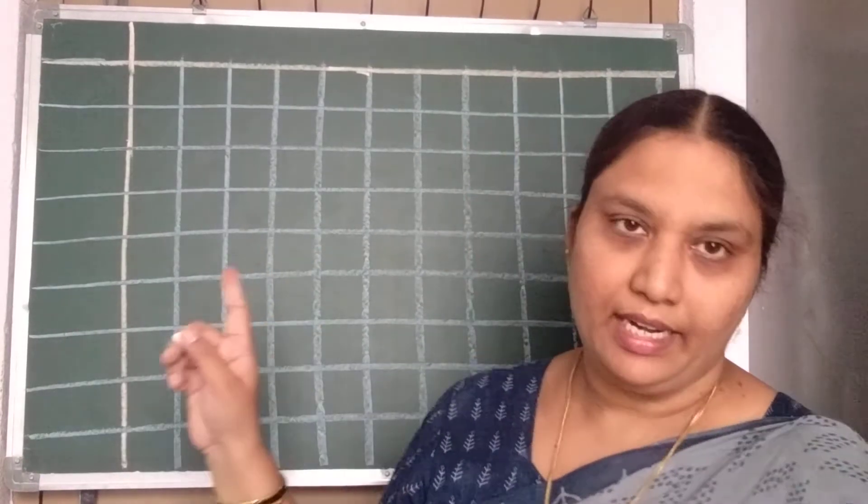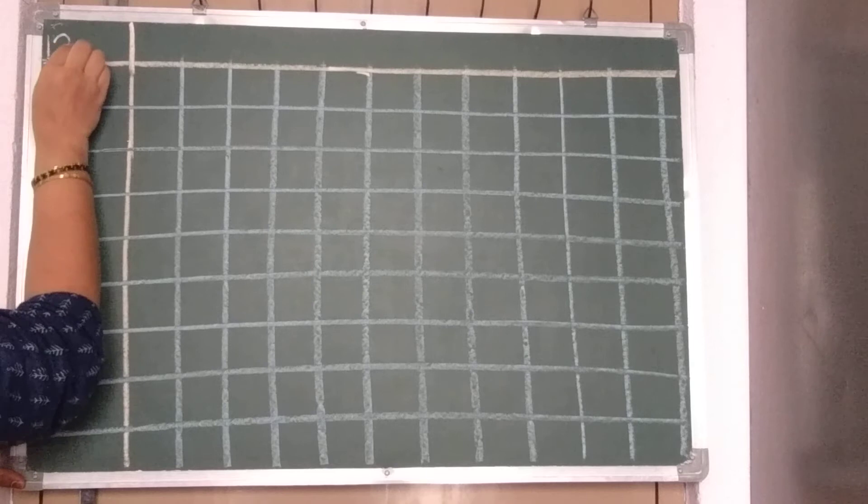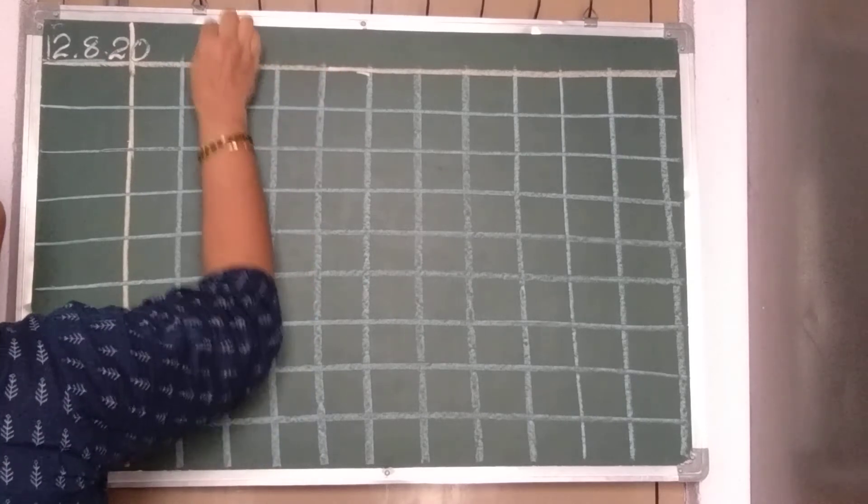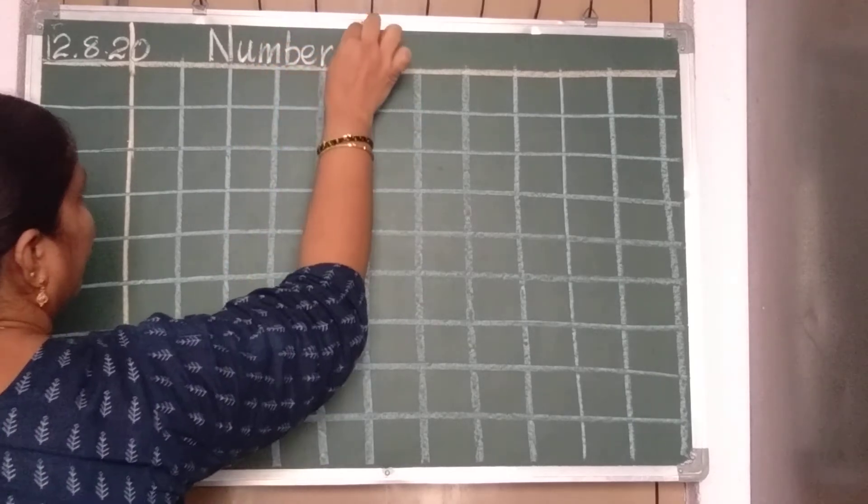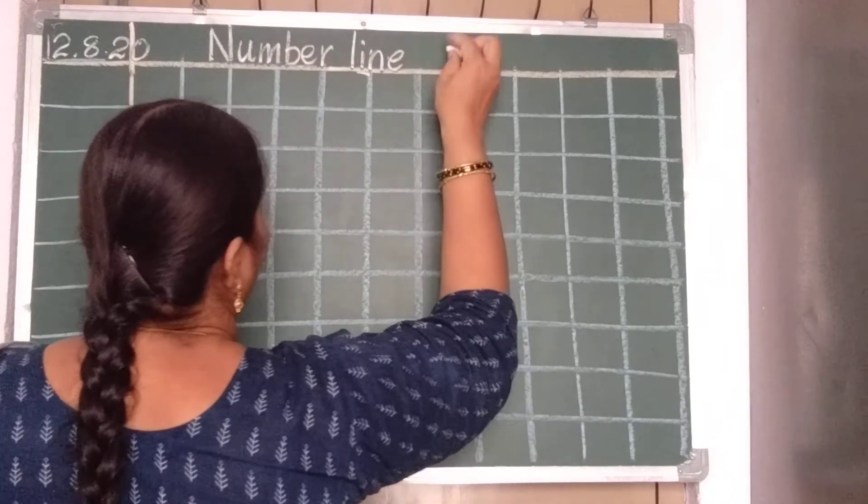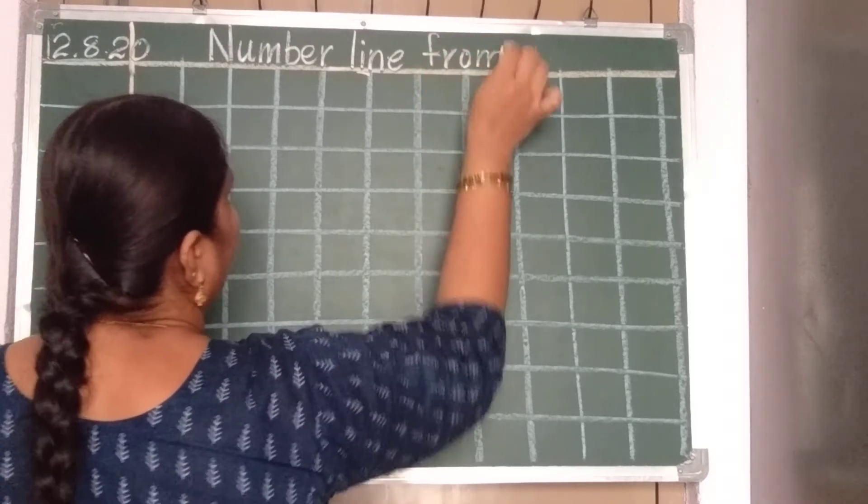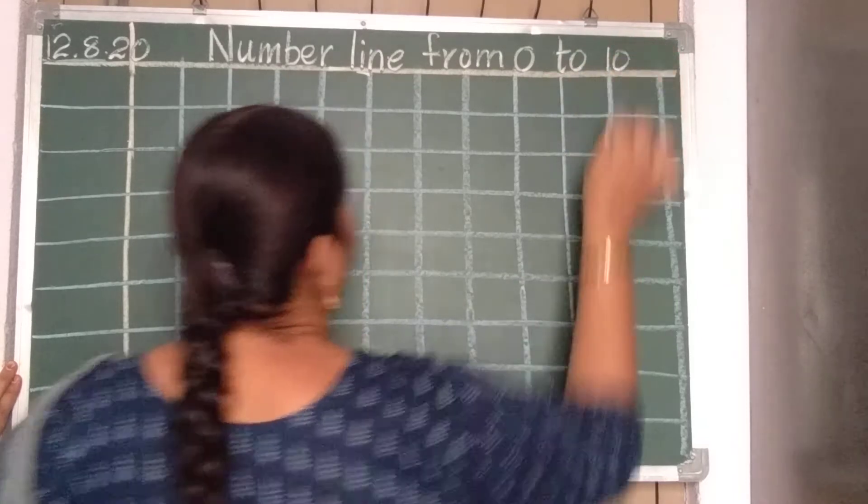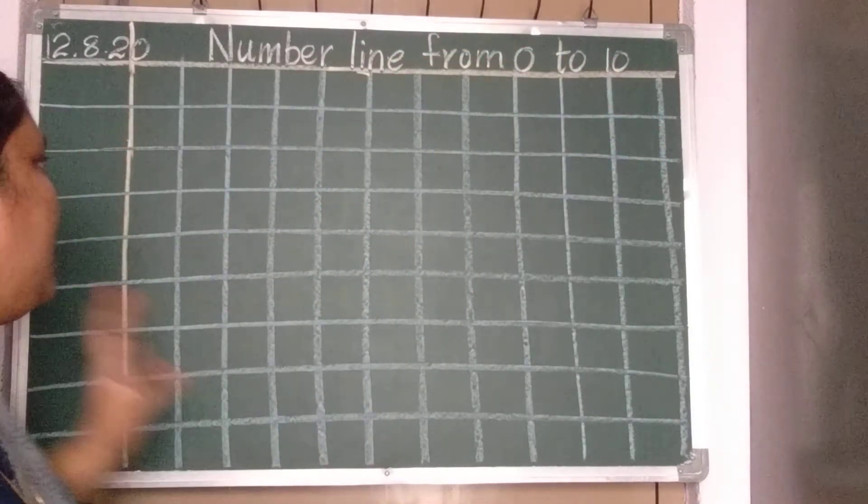Now children will write in the number notebook. Okay. Here you should write the date. 12 dot 8 dot 20 and here on the top, N U M B E R number, 1 finger gap, L I N E line, number line again finger gap, F R O M from again finger gap 0 to 10. Number line from 0 to 10. We are going to draw a number line from 0 to 10.